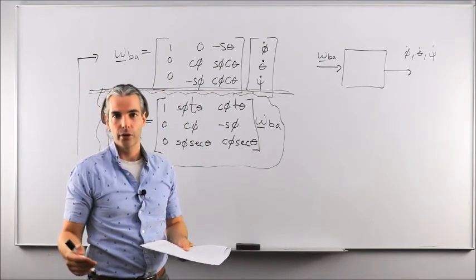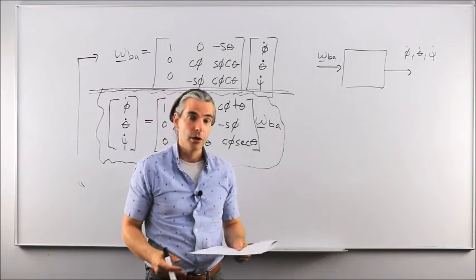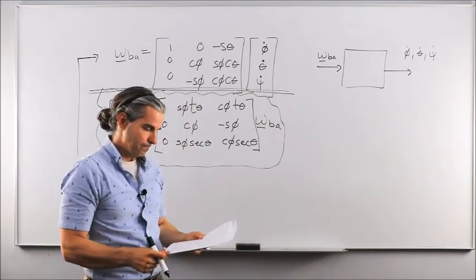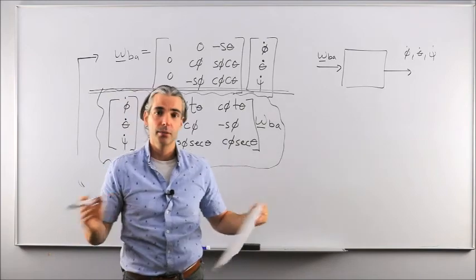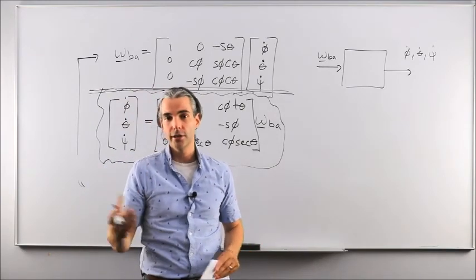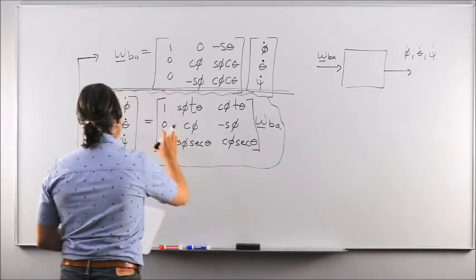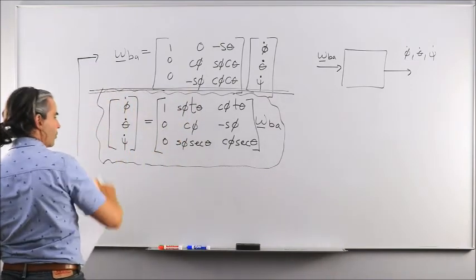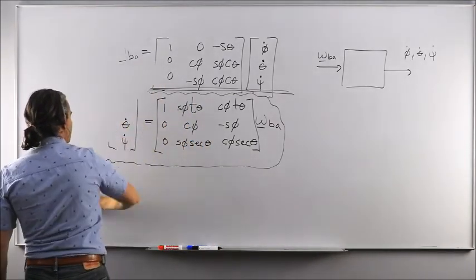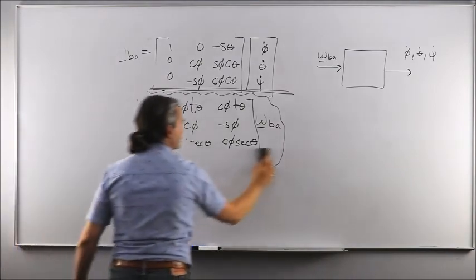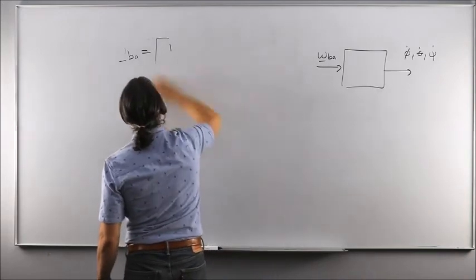I'm happy to answer any questions about this process via email or live Q&A sessions. That concludes the differential kinematics for Euler angles. Now let's look at differential kinematics for quaternions — how to calculate the rate of change of our quaternion given the angular velocity input and the current quaternion fed back.